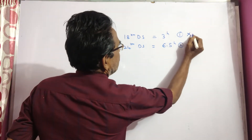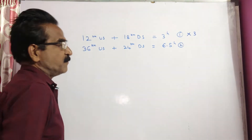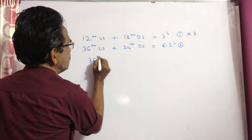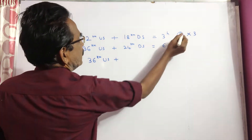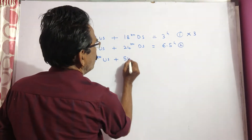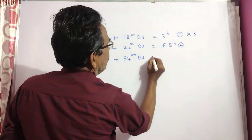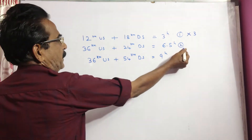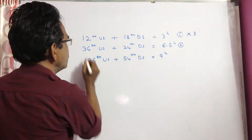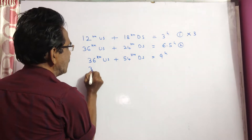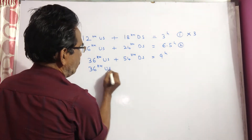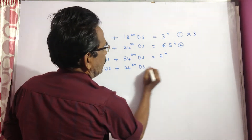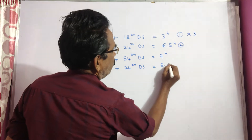I am multiplying the first equation by 3. So that gives 36 kilometers upstream plus 54 kilometers downstream takes 9 hours. We are writing the second equation as: 36 kilometers upstream plus 24 kilometers downstream takes 6.5 hours.